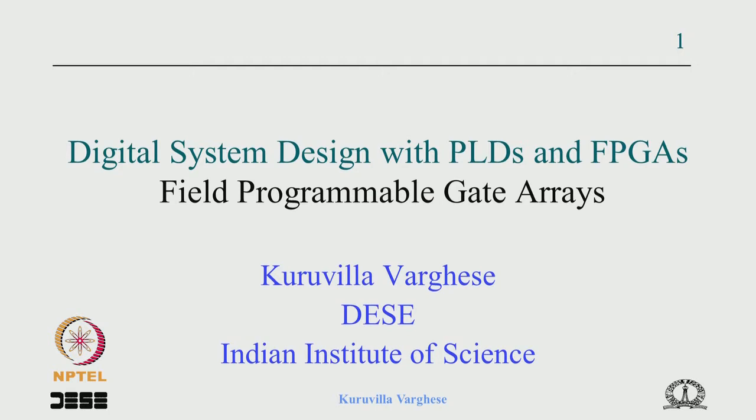Welcome to this lecture on field programmable gate arrays in the course digital system design with PLDs and FPGAs. Last lecture we started with FPGAs and contrasted the FPGA architecture over the CPLD. The CPLD has a central interconnecting switch between the logic blocks, but in FPGA this switch is distributed, making the whole architecture scalable. Also, CPLD had very wide product terms which waste a lot of area, whereas in FPGA there are fewer inputs to the combinational circuit.